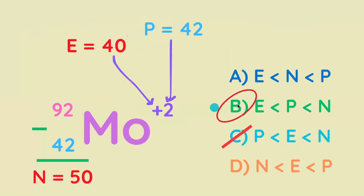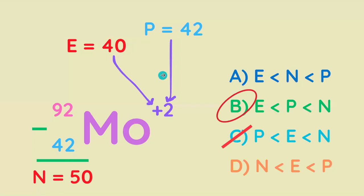Rank the number of subatomic particles for this isotope of molybdenum. The correct answer is B: there are 42 protons, 50 neutrons (the difference), and it's got two more protons than electrons. Comparing them, there are the most neutrons and the least electrons.